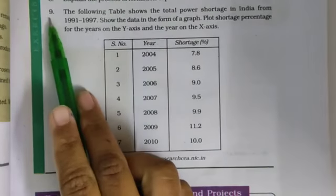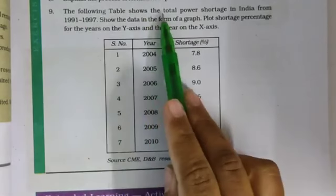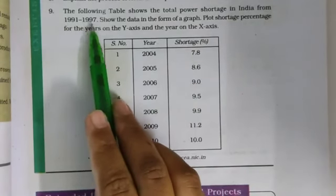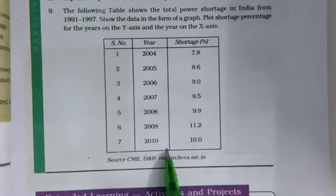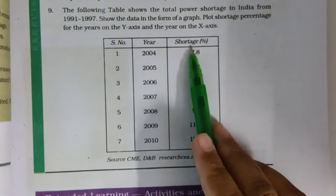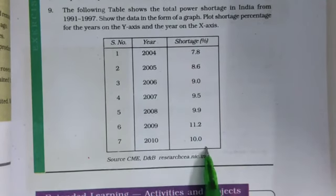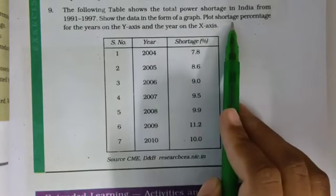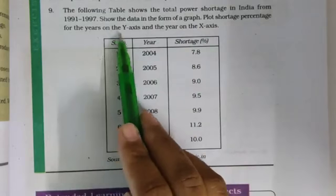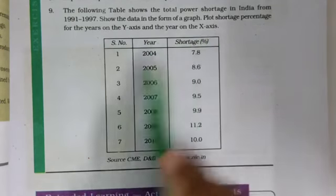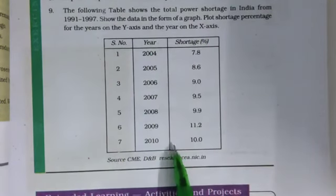Question number 9: the following table shows the total power shortage in India from 1991 to 1997. You have to show the data in the form of a graph, plotting shortage percentage on the y-axis and the year on the x-axis.